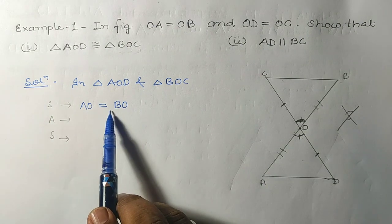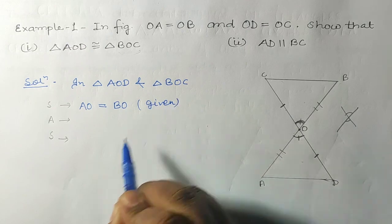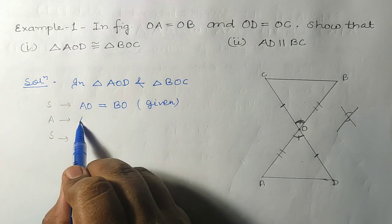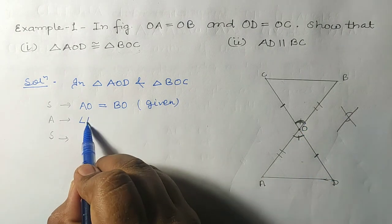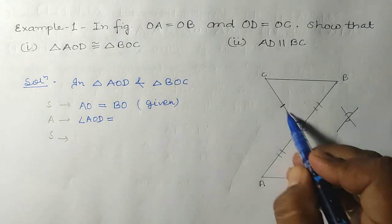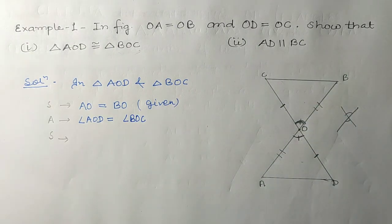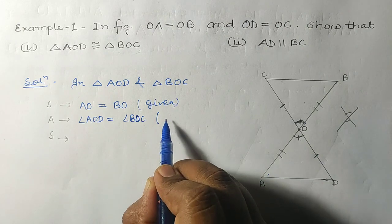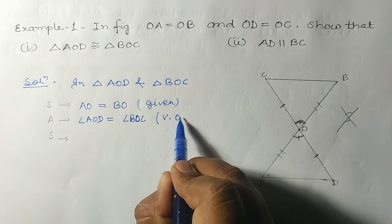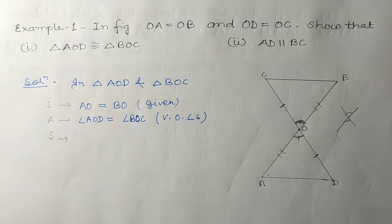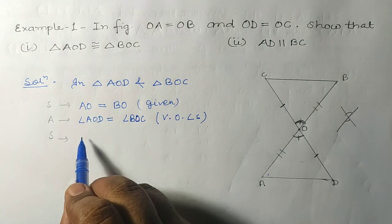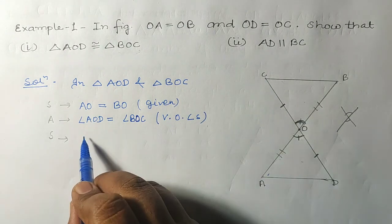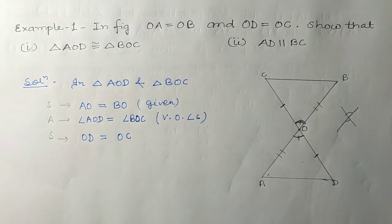So our solution: (1) AO = BO — given. (2) Angle AOD = angle BOC — vertically opposite angles. (3) OD = OC — given. By the criterion Side-Angle-Side (SAS), triangle AOD is congruent to triangle BOC.